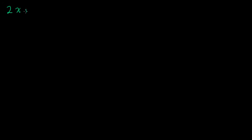Let's try to solve a more involved equation. So let's say that we have 2x plus 3 is equal to 5x minus 2. This might look a little daunting at first — we have x's on both sides of the equation, we're adding and subtracting numbers. We'll do it a couple of different ways.